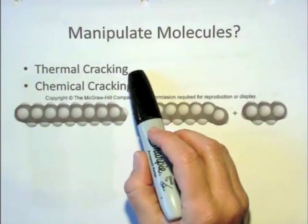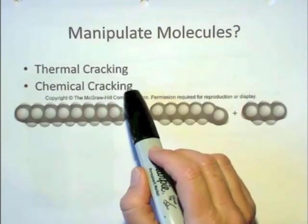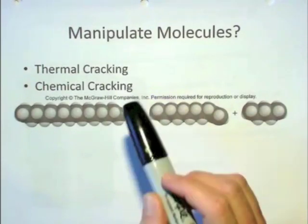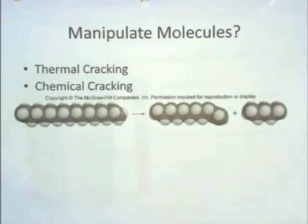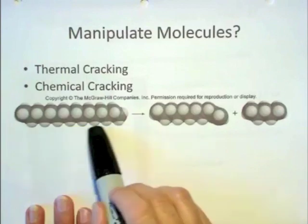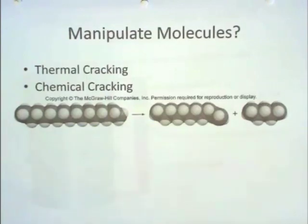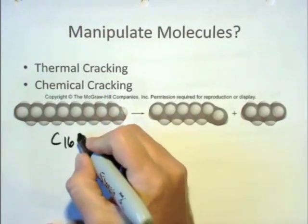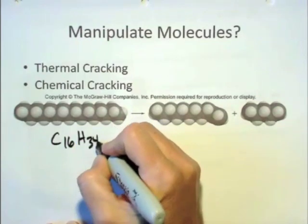So in that cracking, there's two different types. There's thermal cracking and there's chemical cracking. And literally, what it means is that the thermal is just high, high heat. Subject this larger hydrocarbon, in this case this example is C16H34, which is too big for gasoline.